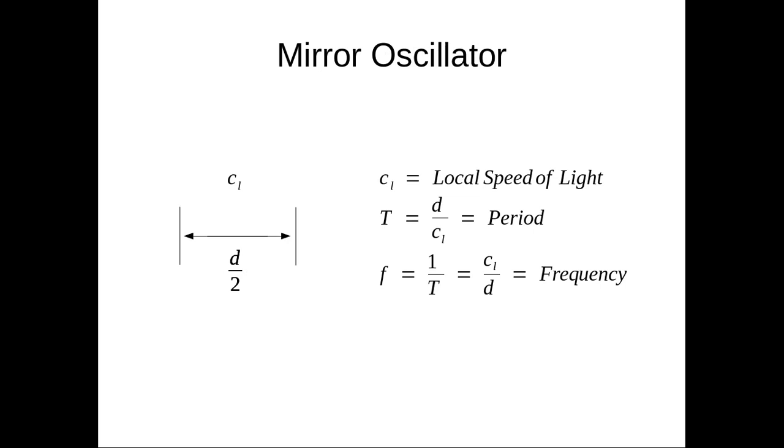Let's have a more concrete example. We have two mirrors here, with a light beam pulse bouncing between the two mirrors. The speed of light, local speed of light, is CL. The distance between the mirrors is D over 2.